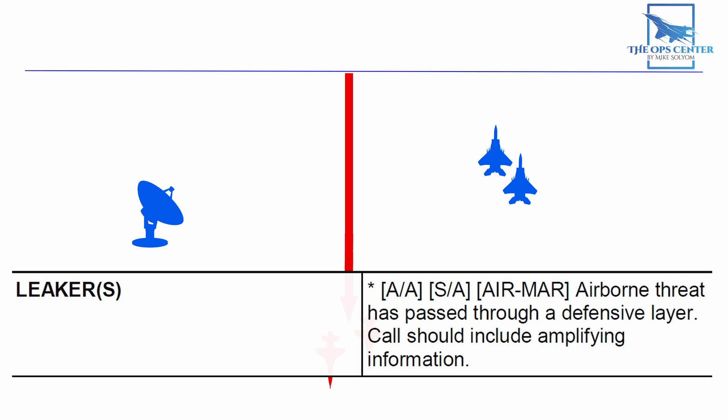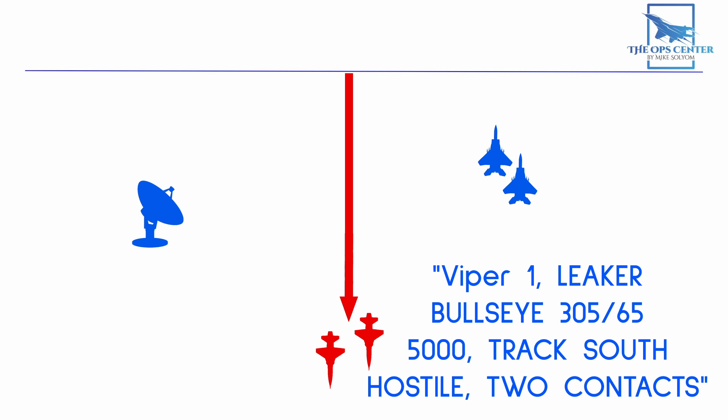Here's how that would be communicated. Viper 1, Leaker Bullseye, 305-65, 5000, Track South, Hostile to Contacts. Here we see that our leaker group is flying at low level heading south. This group is two contacts, which is a good sign these are military aircraft since airliners don't typically fly in formation at low level. And they've been identified as hostile, which means Viper 1 was just given permission to fire on them. That's a lot that was communicated in one short message.